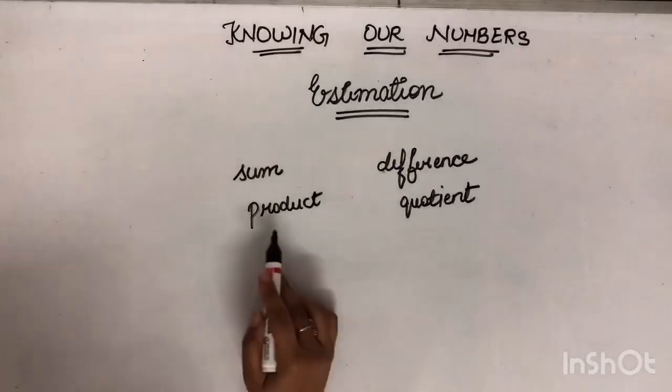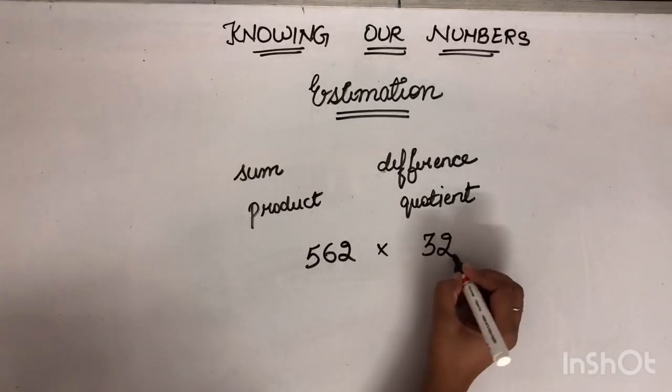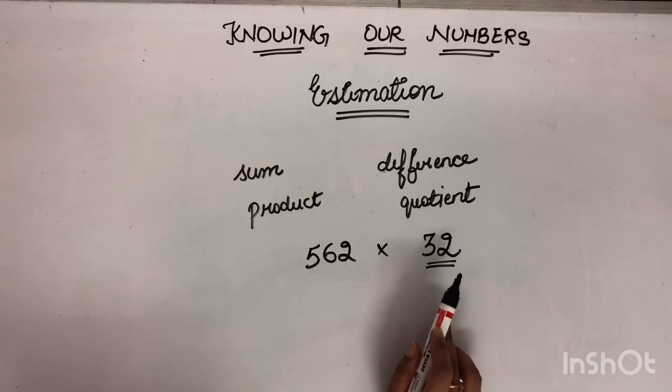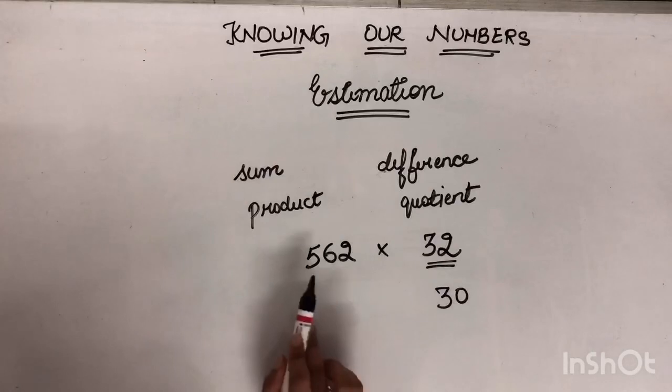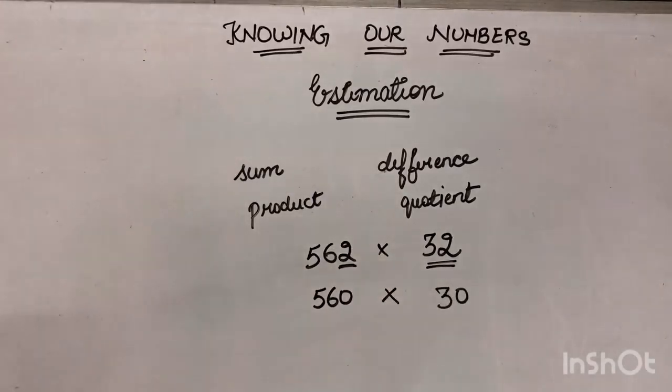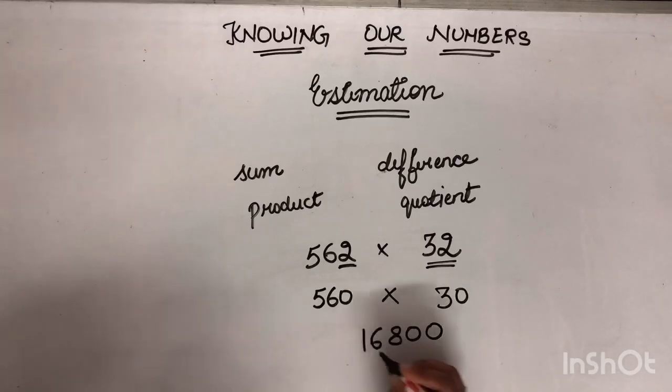In the case of multiplication and division also. I am taking two numbers 562 into 32 you have to find. So it will be more easier if we will find out the estimated value. So now I have told you that first you have to see the smaller number. A smaller number is of two digits. It means you can round it off up to how many places? Up to tens. So 32 will become 30. Ab agar yeh tens pe kiya hai toh yeh bhi kitta pe hona chahi hai? Tens. So 562 will become 560. Now multiplying these two numbers will be more easier. So the product will be 16800.